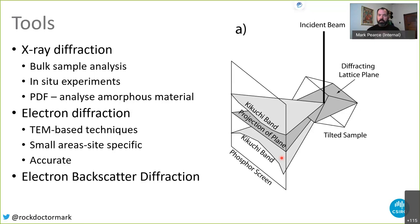We can look at chemical variation by substitution and how diffraction patterns change. At CSIRO we have a nice lab in Melbourne for doing in situ experiments where we can heat things up and look at how reactions occur by tracking different minerals that come and go as they react. There's also the idea of pair distribution function analysis, which lets us analyze amorphous material.